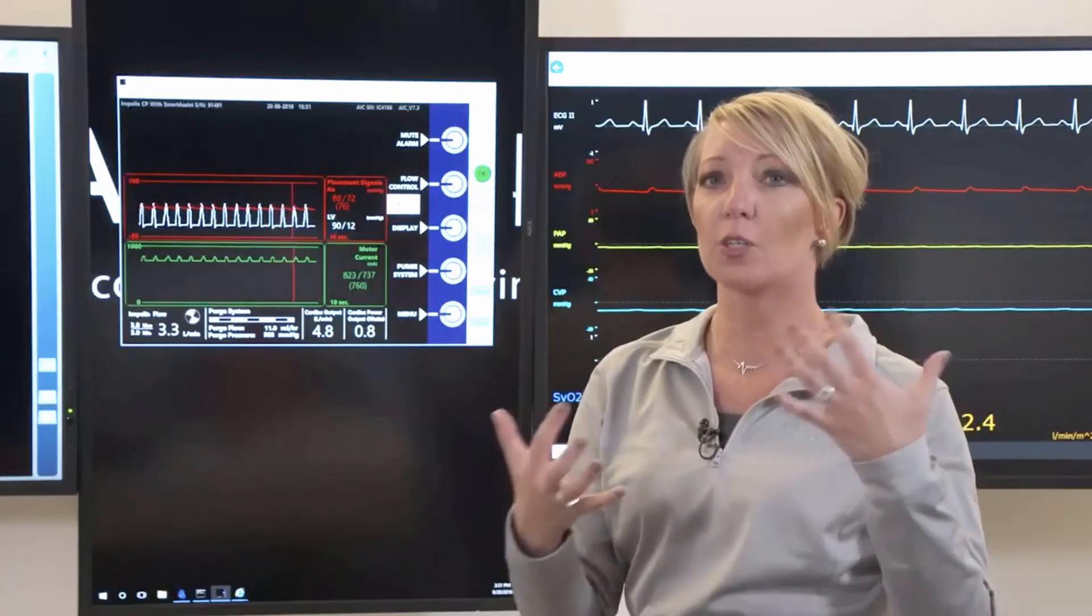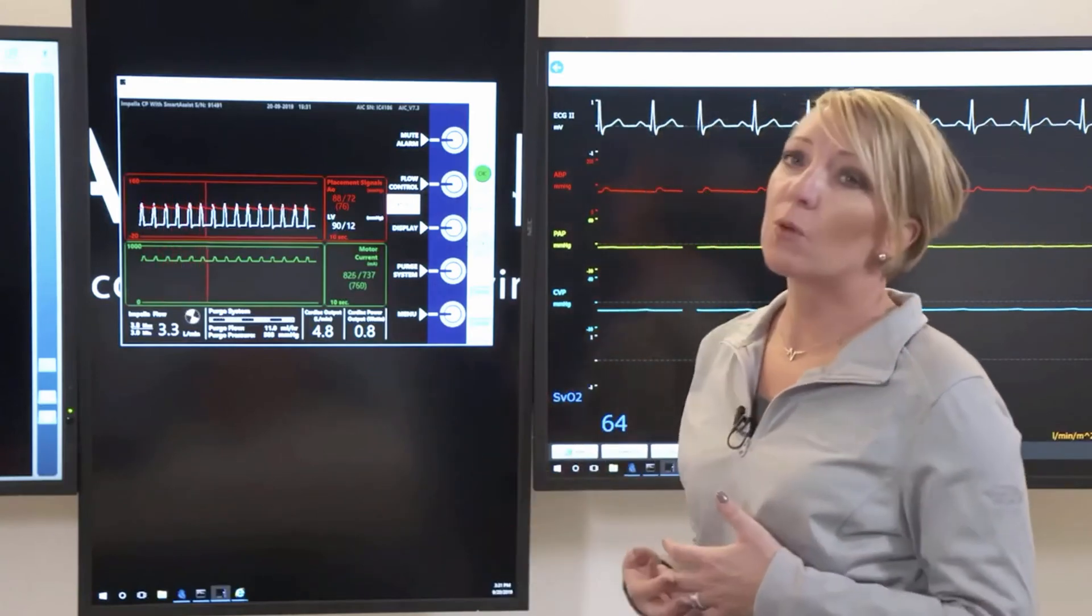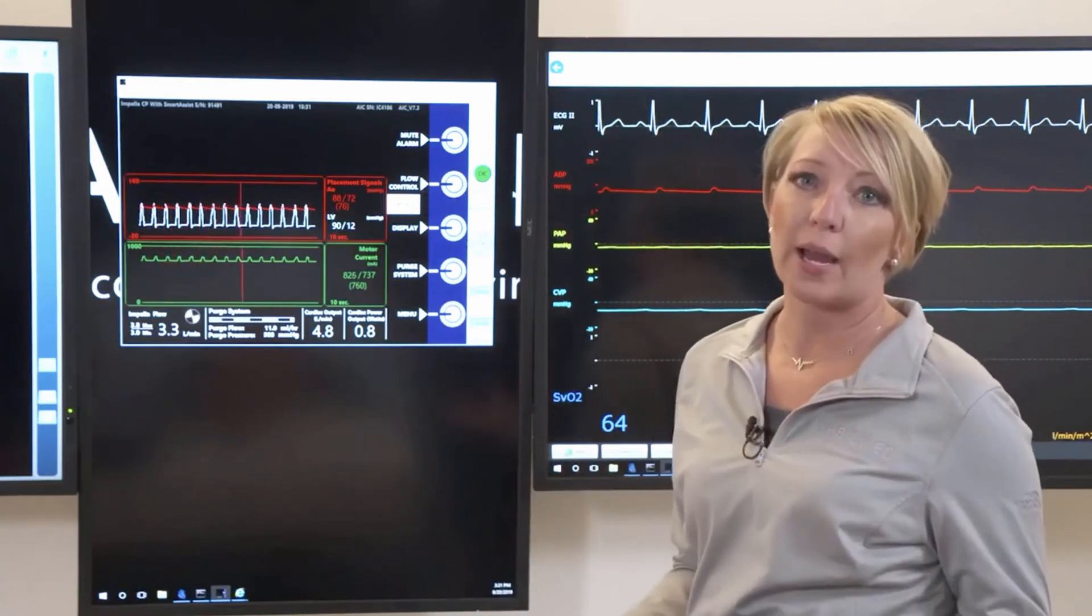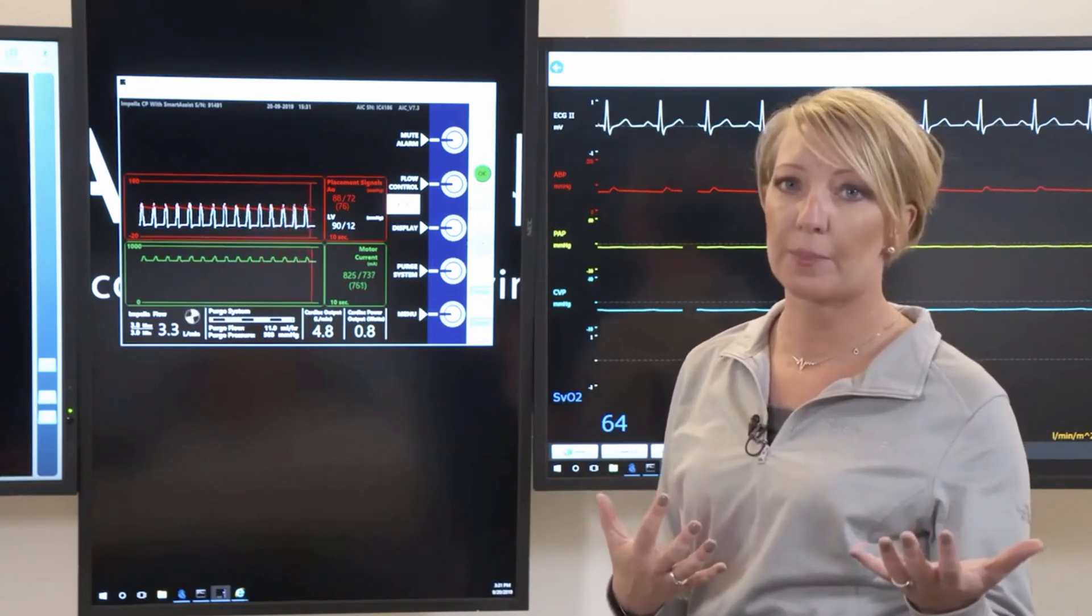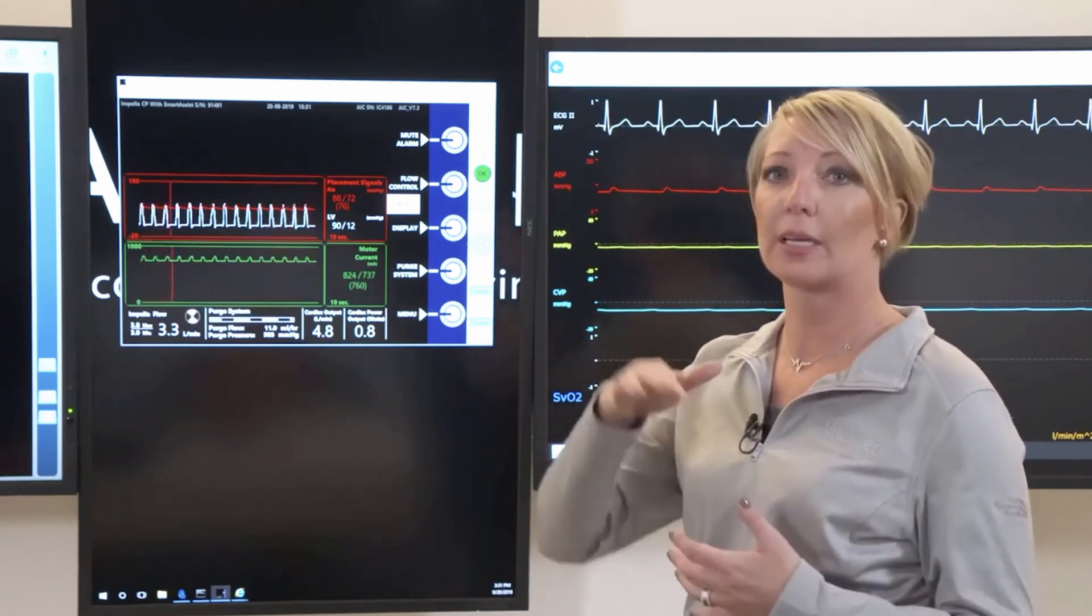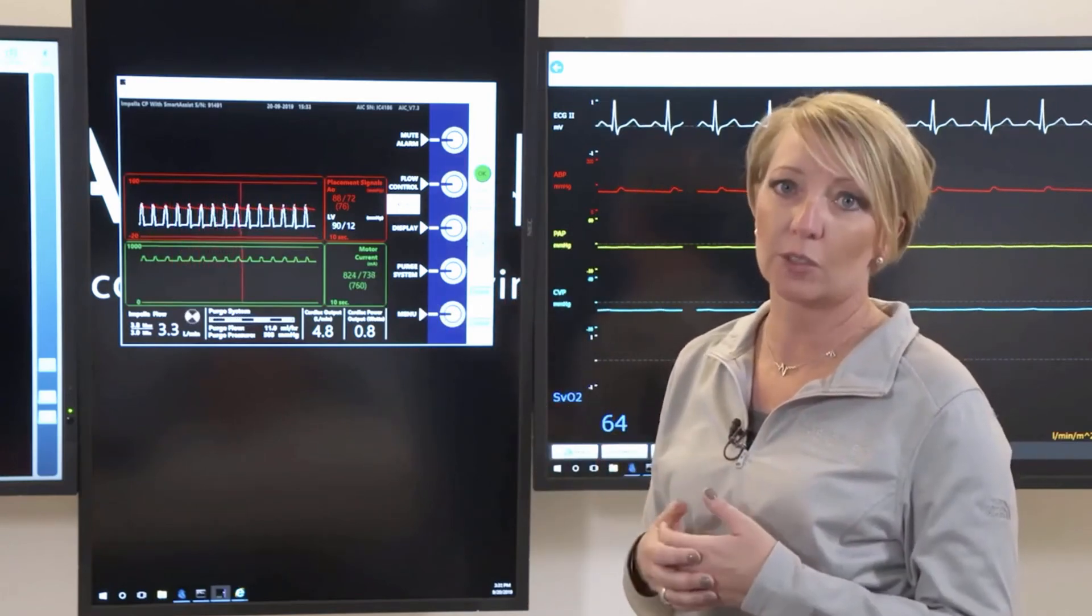You're still getting flow, it's just not at that ideal spot that you would have at that given P level. The white alarms are going to be more your FYI alarms. This is usually if they're doing something in the background with the purge solution. It might give you a message just saying hey, I did this. More of an informational alarm.